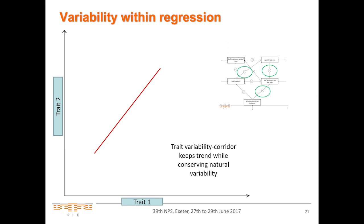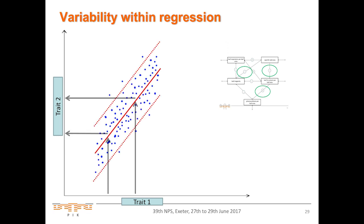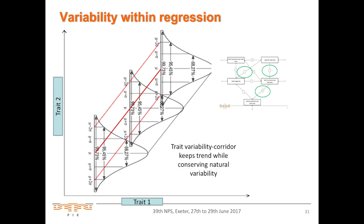Of course, you want to recognise the variability happening when you put in trait relationships between two traits — you can describe this with a regression line, but you want some variability around it, not a one-to-one translation. To achieve this noise, we put in what we call the trait variability corridor. You keep the trend between the two related traits, but by applying a normal distribution for each value, you can conserve a little of the natural variability.